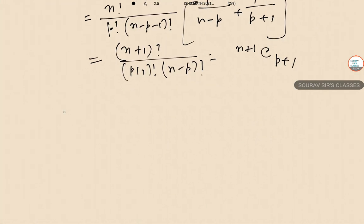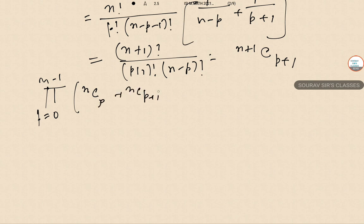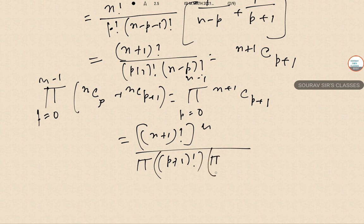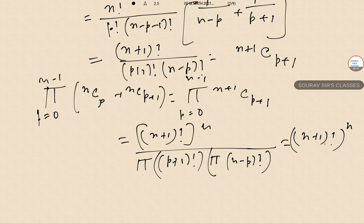Taking the product form with p going from 0 to n-1: the product of (nCp + nC(p+1)) equals the product of (n+1)C(p+1). This evaluates to (n+1) factorial whole to the power n, divided by the product of p factorial squared.